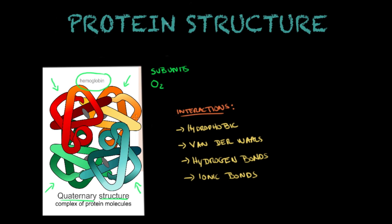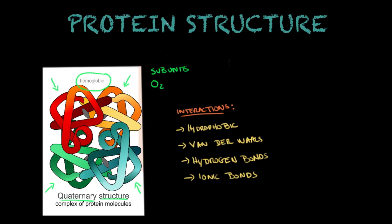The interactions between these subunits help the protein perform its function. As hemoglobin binds oxygen, the four subunits shift their relative positions slightly, changing the quaternary structure. Ionic bonds are broken and buried side chains are exposed, enhancing the binding of additional oxygen molecules — this is how the protein performs its function. The structure changes again when hemoglobin releases its oxygen molecules to the cells of your body.